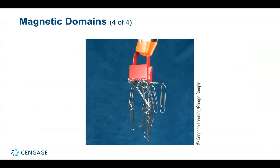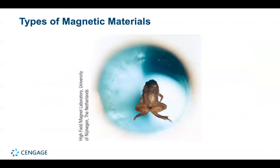For diamagnetism: a frog is levitated in a 16 Tesla magnetic field. The levitation force is exerted on the diamagnetic water molecules in the frog's body; the frog suffers no ill effects. Paramagnetic materials also have magnetic moments that tend to align with an externally applied magnetic field, but the response is extremely weak compared with ferromagnetic materials. Examples of paramagnetic substances are aluminum, calcium, and platinum.